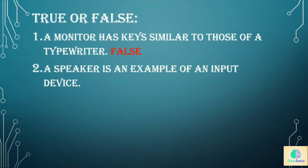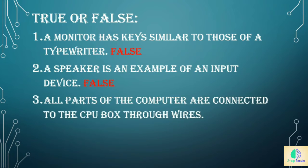Number two: a speaker is an example of an input device — and the answer is false. This statement is false because we know that a speaker is an example of an output device, not an input device. Number three: all parts of the computer are connected to the CPU box through wires — and this is a true statement.